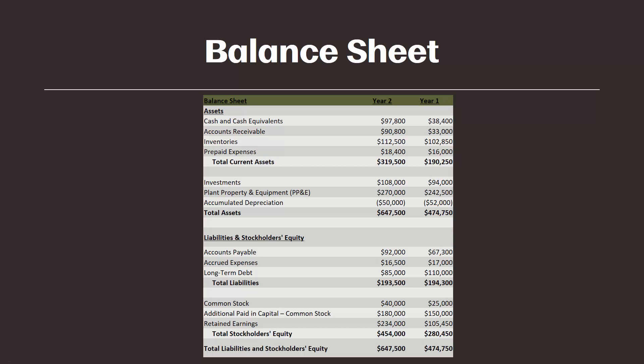Before we go back to the rules, I want to point out one thing you have seen before, but it is labeled differently on this balance sheet. This balance sheet has a line item called accrued expenses. Accrued expenses are liabilities, even though they have the word 'expense' in their name — it's really important to remember that. Accrued expense is just another term for a payable. Examples of accrued expenses are salaries payable, utilities payable, and accounts like that.